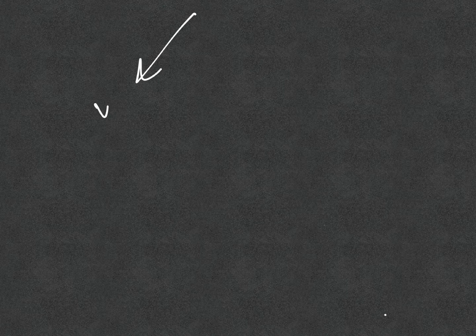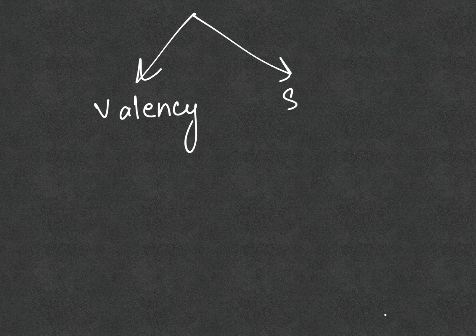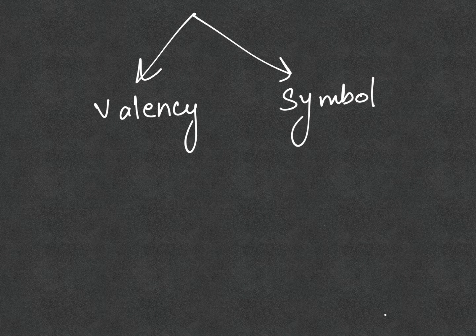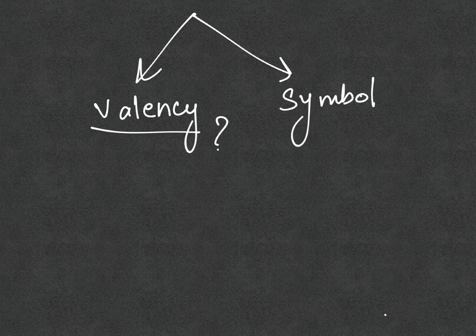To write chemical formulas there are certain rules. To understand those rules, first you need to know about two things: valency and the symbol of the element present in the formula. So let's understand what valency is.